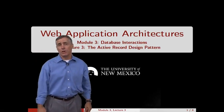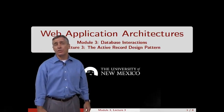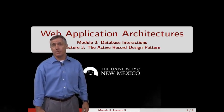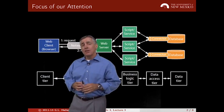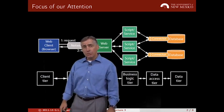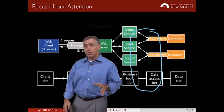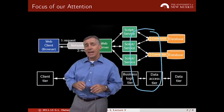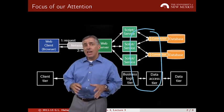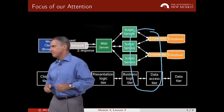Welcome to the third lecture in Module 3, and in this lecture we'll cover the Active Record Design Pattern. Now if you recall, we've described the fact that Rails is based upon the Model View Controller Design Pattern, and what Active Record does for you is it links together the business logic and the data access tiers. It's the M in the Model View Controller Design Pattern.